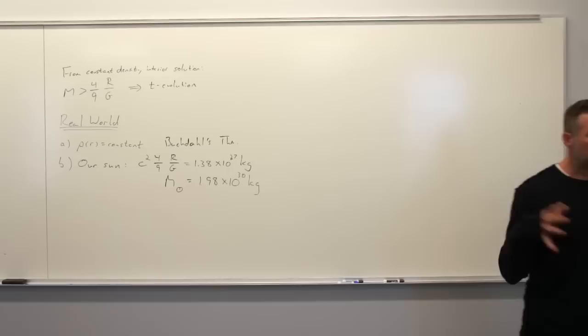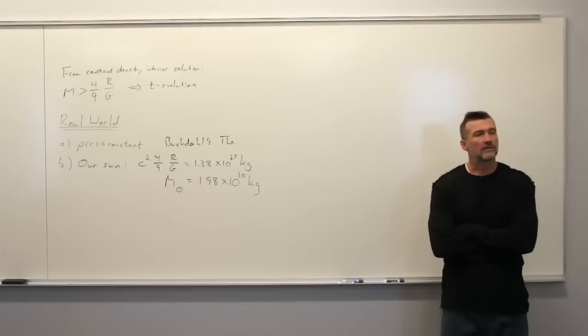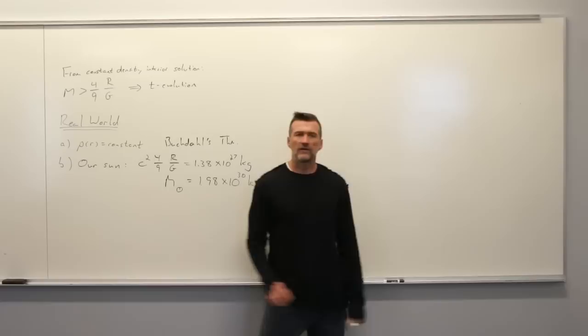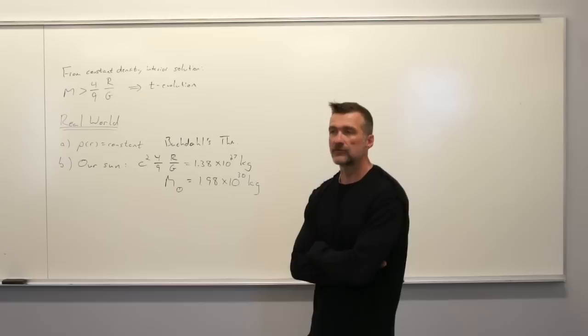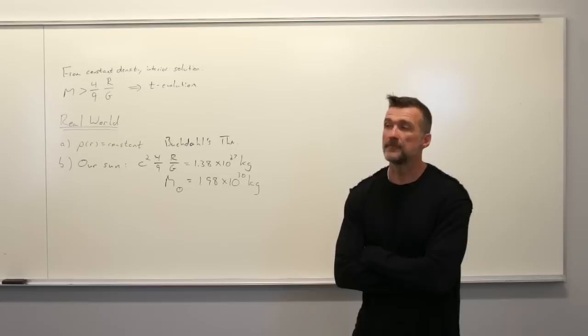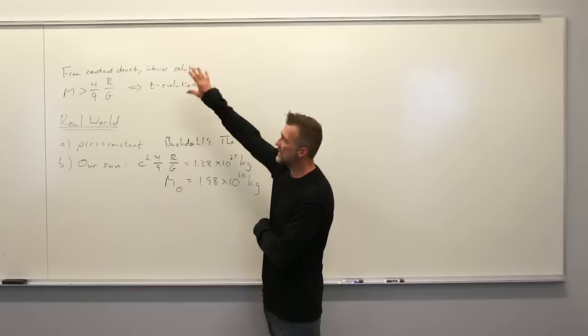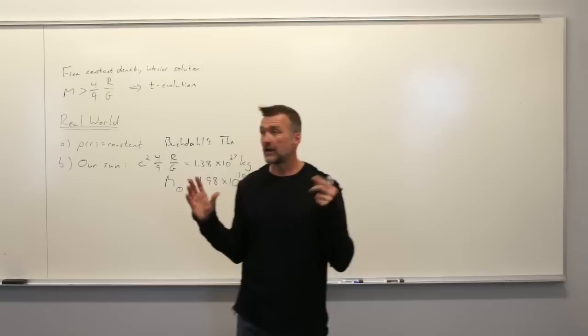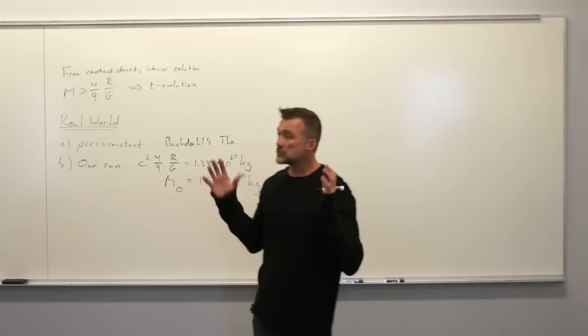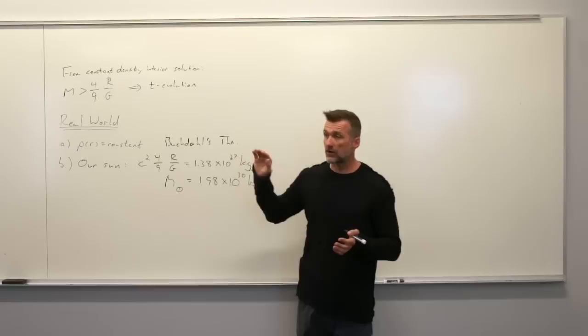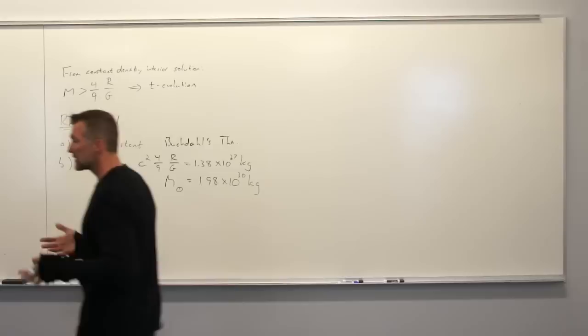Our Sun satisfies this condition, but our Sun has been hanging out for a while. Why isn't it collapsing? It doesn't have constant density, but Buchdahl's theorem says you don't have to rely on that. The answer is the pressure of fusion is pushing out. This entire analysis was only looking at gravity, ignoring any other forces. A star has thermonuclear interactions going on in its core, creating an outward pressure. If you just play the gravity game and shut off all other forces, four-ninths R over G is the limit. But stars are nuclear powerhouses burning fuel, so they have an outward pressure.